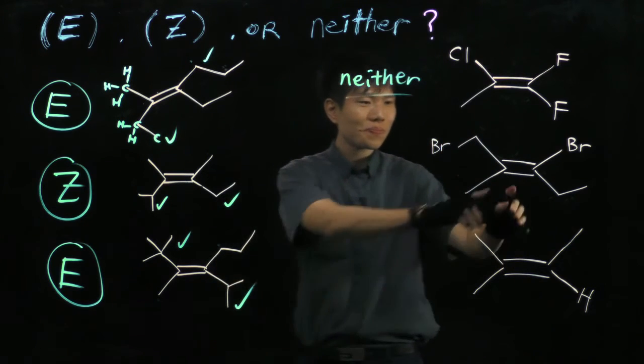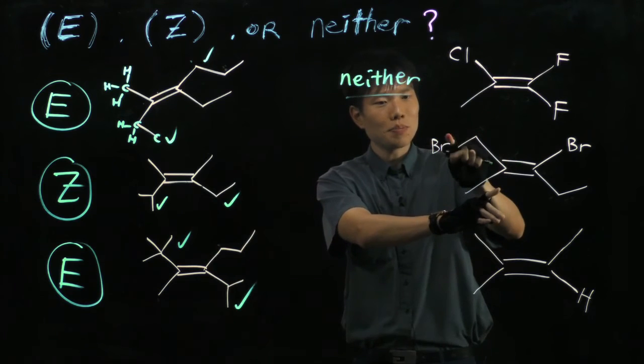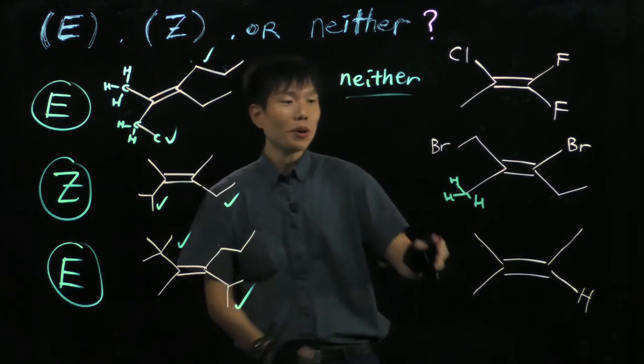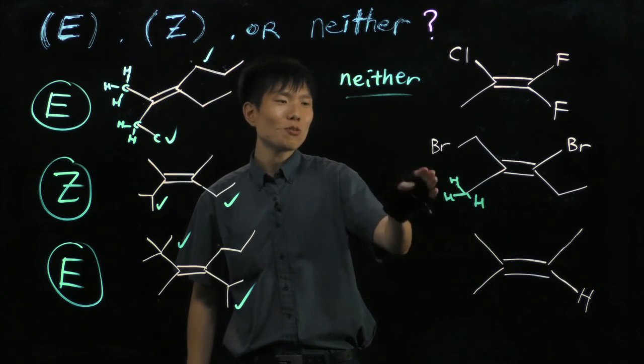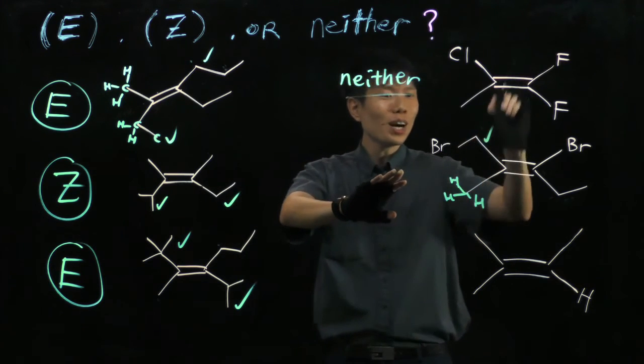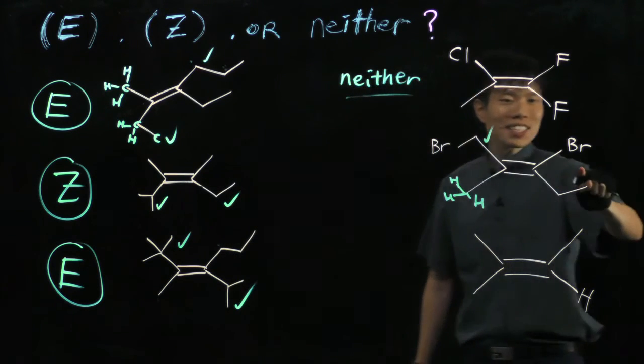Next molecule, carbon with a Br, carbon with hydrogen. Hydrogen, again, has a smallest atomic number. Everything will beat hydrogen if you have a nucleus of an atom here. So check the top one, high priority. And for the other side,